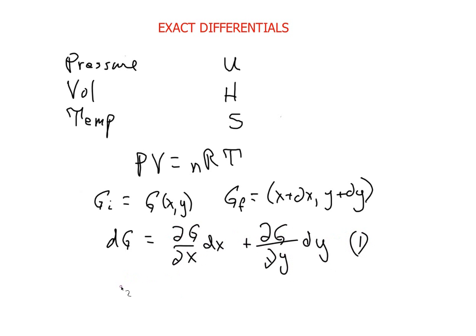And from an experimental viewpoint, we observe the initial and final states, g_i and g_f. What we would like is for the integral around the line integral, or the path of dg, to be equal to g_f minus g_i, which is equal to g of x, y minus g of x plus dx, y plus dy.